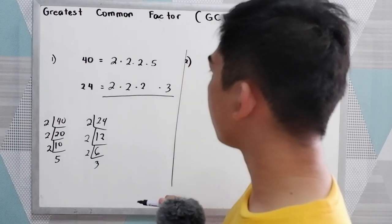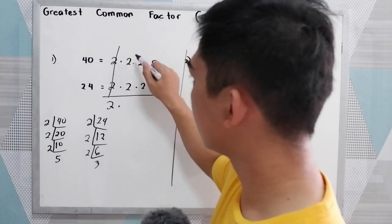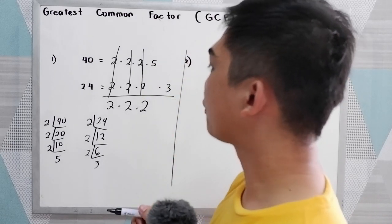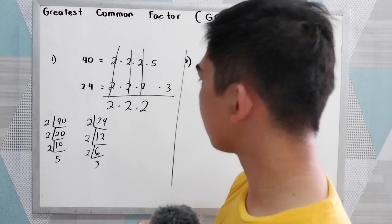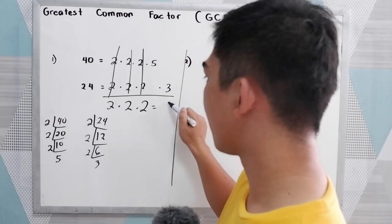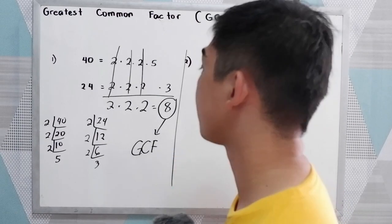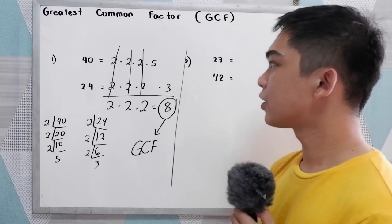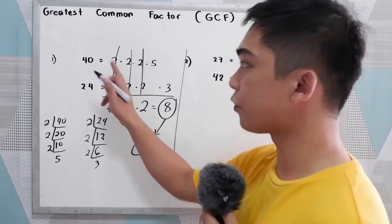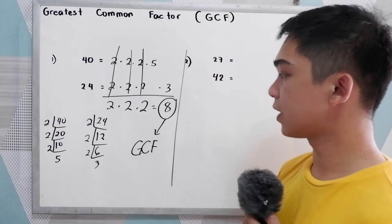In this technique, align the common factors. We have 2, 2, and 2 as the common factors. After getting the common factors, get the product: 2 times 2 times 2, that is 8. This is our GCF. If you want to try the listing method, write all the factors of 40 and 24, and the common factor will give you 8.